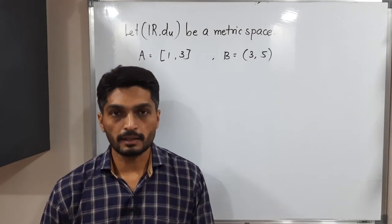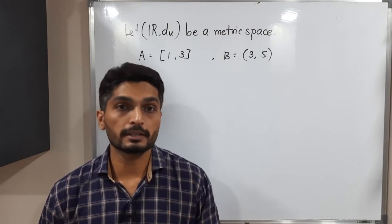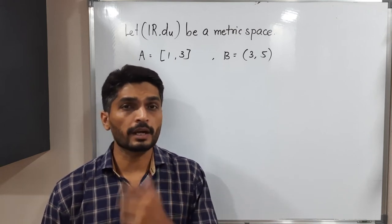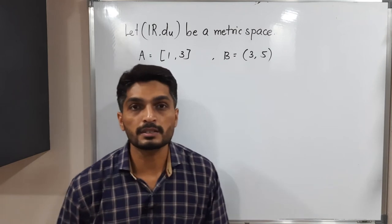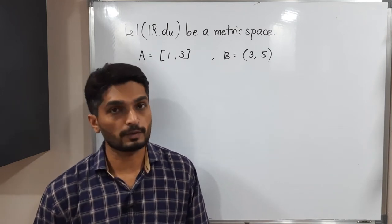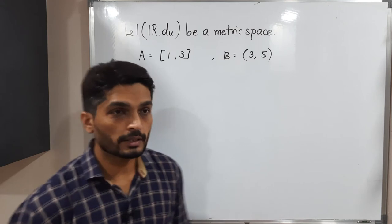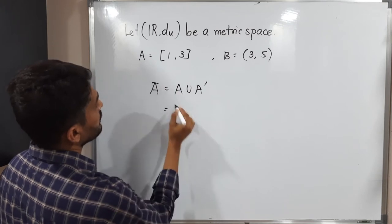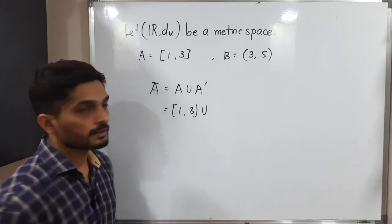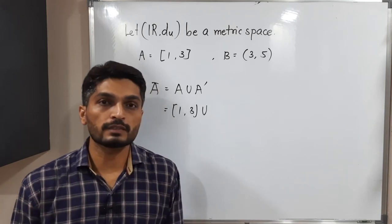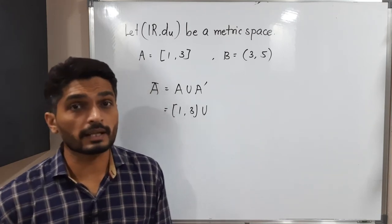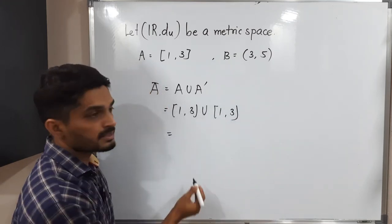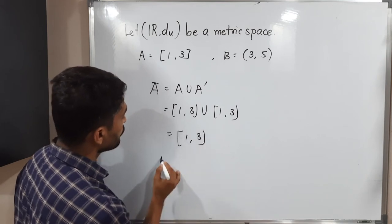Let us discuss one more example. Again I have taken the usual metric space R, with D of X, Y equal to mod X minus Y. The sets are: A equals the closed interval [1, 3] and B equals the open interval (3, 5). One set is closed and the second set is open. Let us find A-bar and B-bar. A-bar equals A union A-dash. A is the closed interval [1, 3] and its limit points give the same set, so A-bar equals [1, 3].